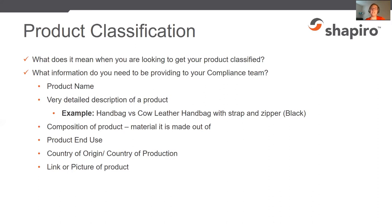We always recommend sending a link or a picture of the product. This helps us catch anything you may miss in a description. For example, if you send us a handbag link and it actually shows not only a handbag but also a wallet insert and a coin purse insert — in different colors, with different studs — that can all affect what the tariff classification is going to be.